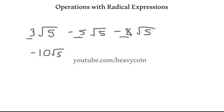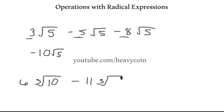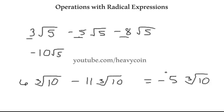3 minus 5 is negative 2, and negative 2 minus 8 is negative 10. Let's look at another one. If I had 6 times cube root of 10 minus 11 times cube root of 10 — as you can see we have cube root of 10 in both of these, so this would be 6 minus 11, and 6 minus 11 is going to be negative 5. We just write cube root of 10 and rewrite that part.